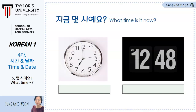How about number 7? 하나, 둘, 셋, 넷, 다섯, 여섯, 일곱. There is no irregular form for number 7, so 7 o'clock is simply 일곱 시예요.